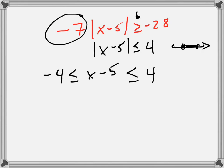Then I put x minus 5 right in the middle. Now I add 5 to all three sides. I get 1, I get 9, and I get x in the middle.